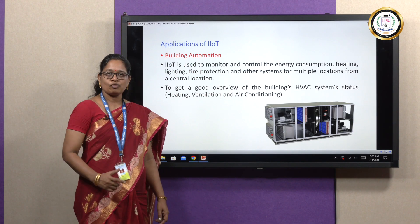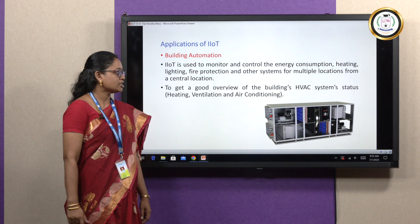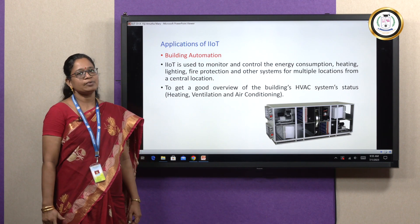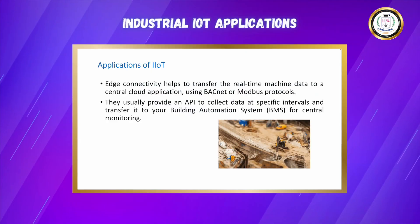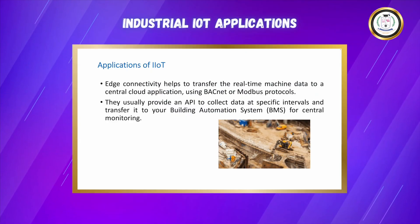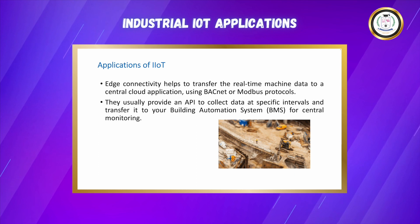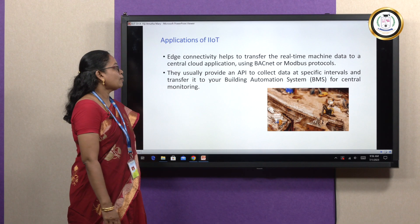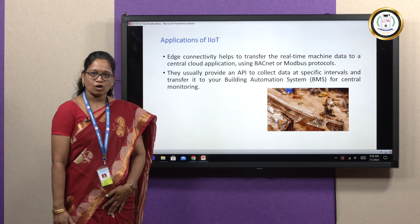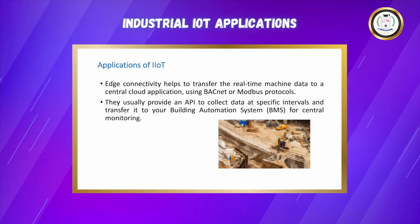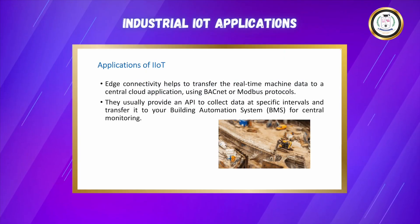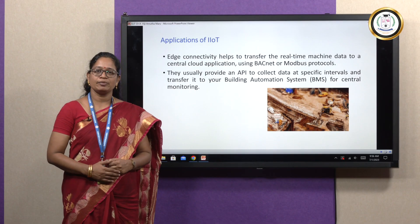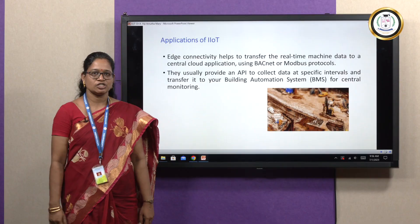Thus, a good overview of the building's heating, ventilation, and air conditioning system status can be obtained. Edge connectivity plays another role — it helps to transfer real-time connection data to a central cloud application with the help of protocols such as BACnet or Modbus. Thus, an API is provided to collect data at specific intervals, and these data can be transferred to the building automation system for central monitoring.